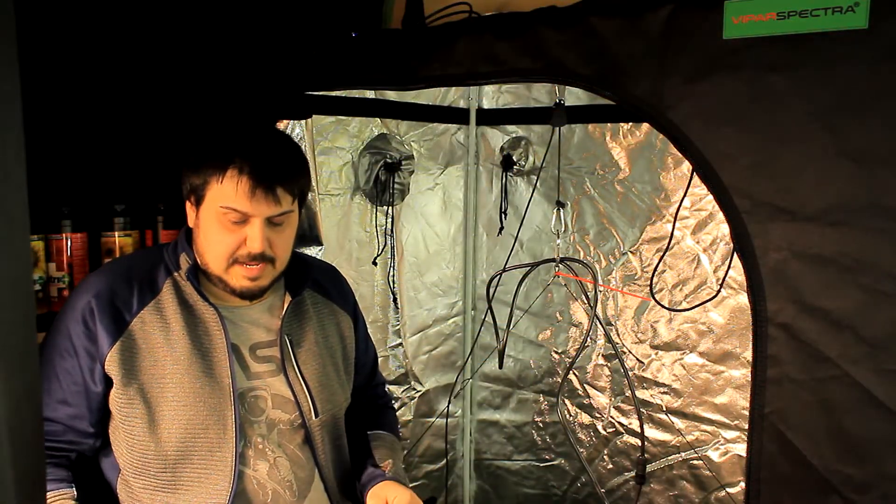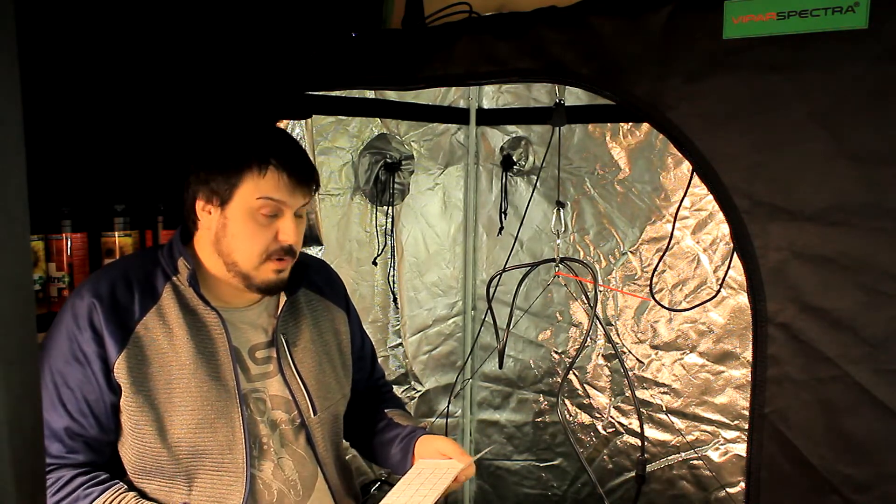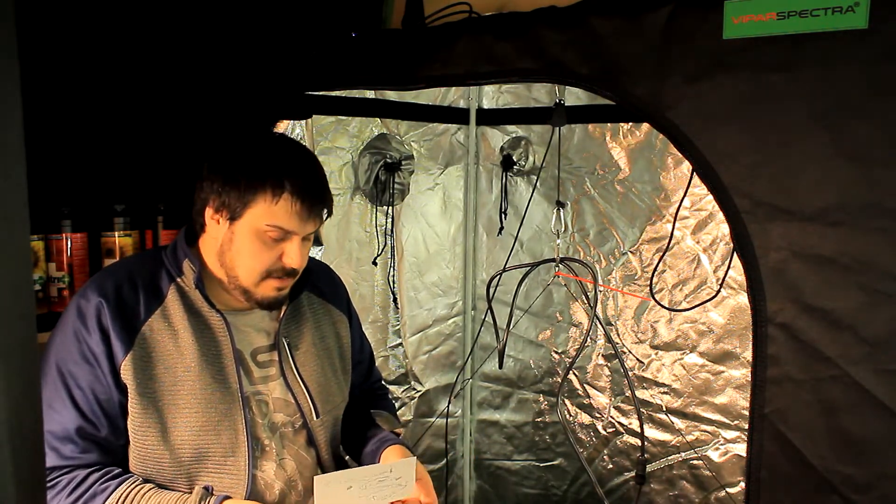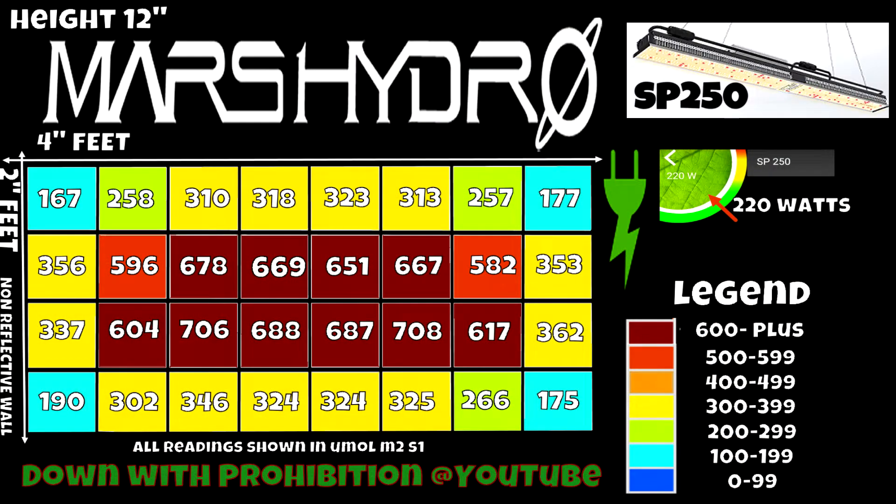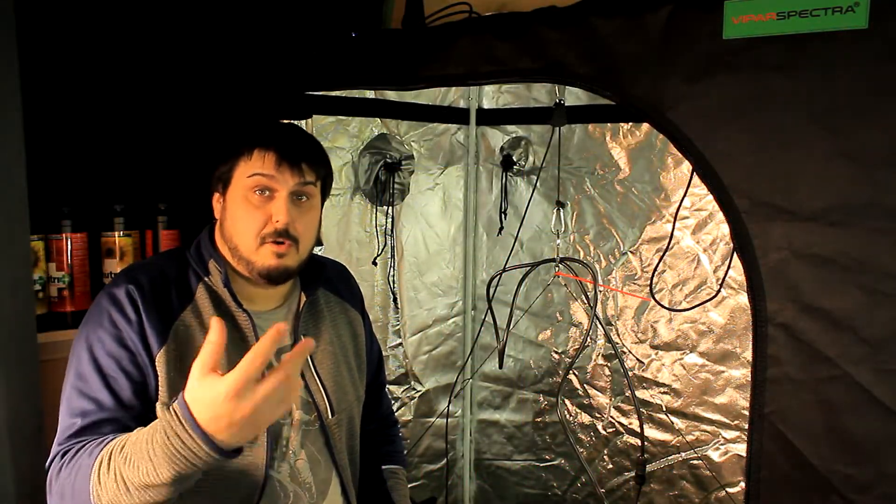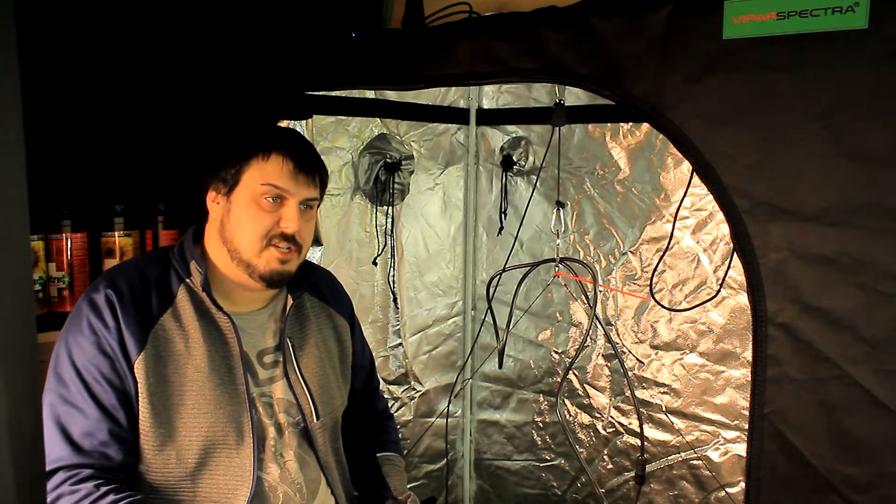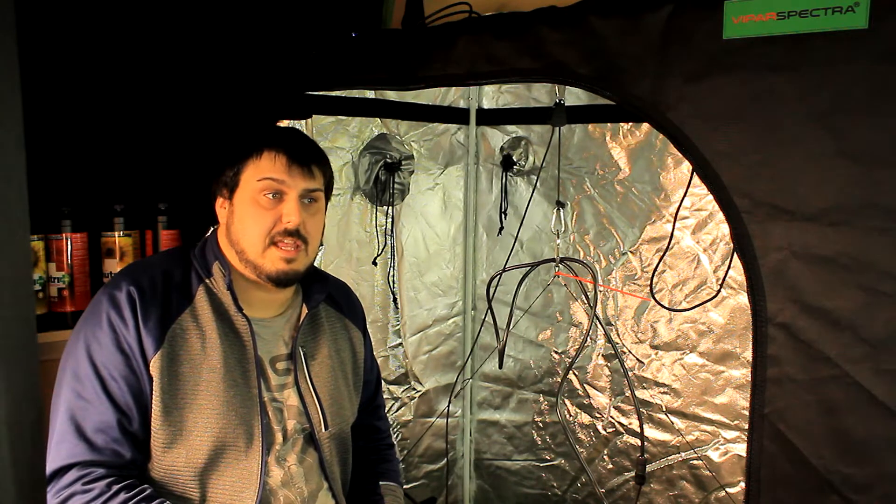All right guys, so let's take a look at the PAR map. I had tested here without being in a reflective background at 12 inches, and the numbers weren't that bad. Under the light or close to around the light, we were getting about 700 PAR, which is fairly decent at 12 inches. You could flower some plants with that. That's definitely all right. So what we actually did a little differently here that we don't normally do is we did it in a reflective environment, so it's in optimal conditions because we want to see exactly what this light was going to produce.